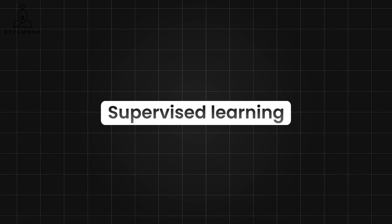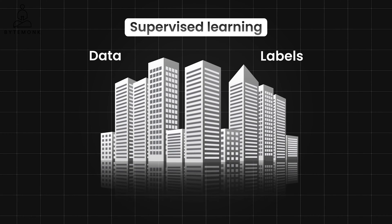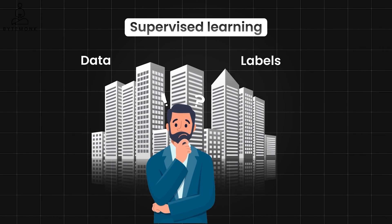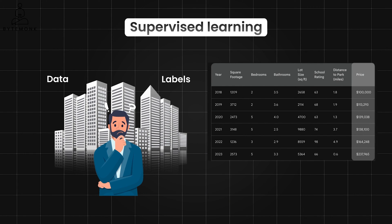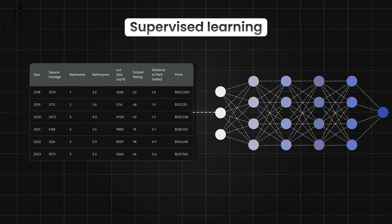Generally, for supervised learning, we are going to require two things: the data and the labels. Imagine you are a real estate agent and want a way to quickly estimate a house's potential selling price. Supervised learning can help. Here is some mock sales data over time along with the labels — selling price.